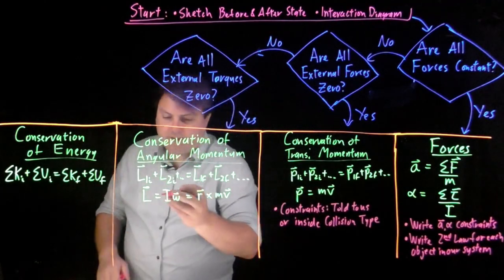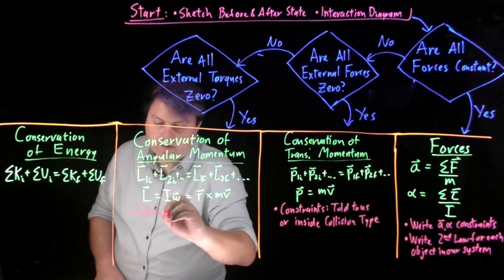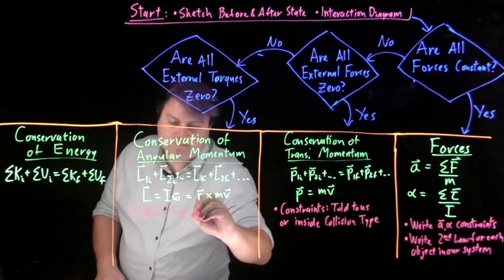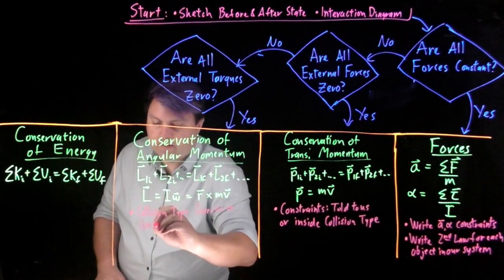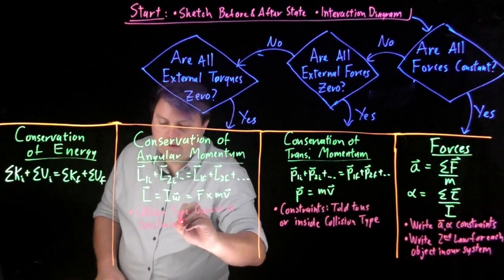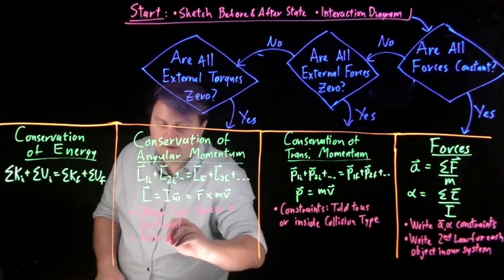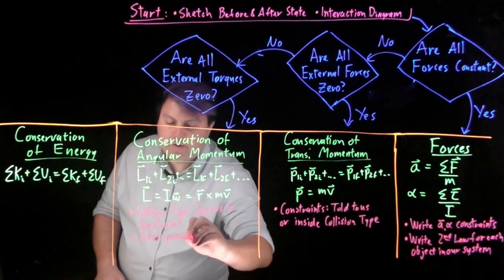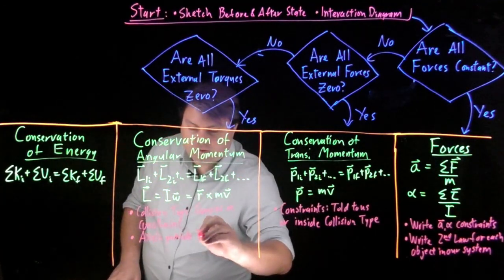And so we still have then that our collision type gives us a constraint. And a reminder for this that axles, things that we pivot on or that we rotate through, provide external forces.